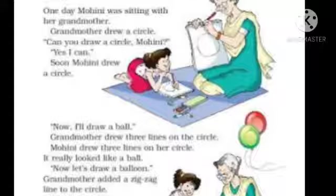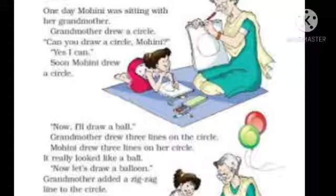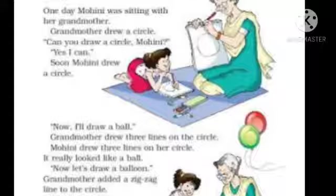Now I will draw a bowl. अब Grandmother कह रही है कि अब मैं एक bowl draw करूंगी. Grandmother drew three lines on the circle. उसने circle में three lines draw कर दी. Mohini drew three lines on her circle. अब Mohini ने अपने circle में three lines draw कर दी. It really looks like a bowl. वो वास्तव में एक bowl के जैसा दिख रहा था. देखो नीचे picture में, एक circle के अंदर lines draw की हुई है, तो वो एक bowl जैसी दिख रही है।